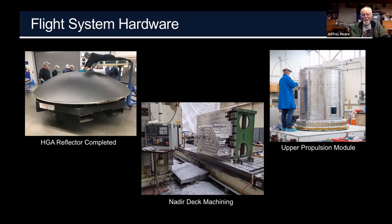The upper propulsion module will carry fuel to get into orbit around Jupiter and perform all necessary orbit trim maneuvers to keep up the planned encounters, whatever final tour design we settle on.